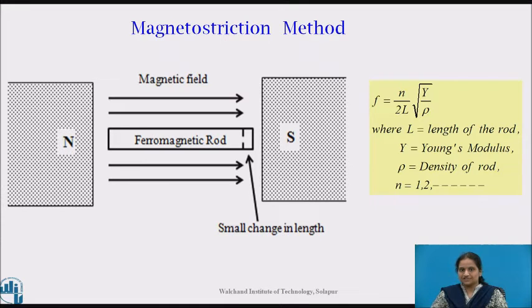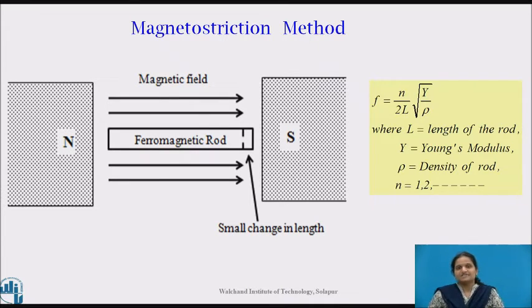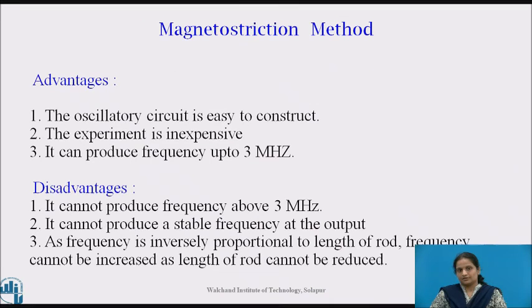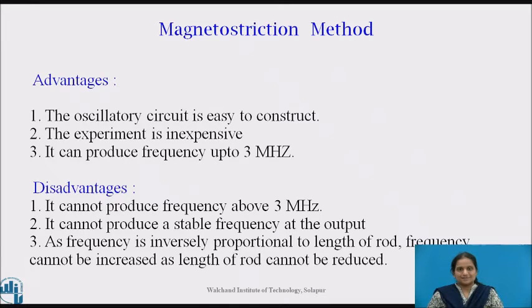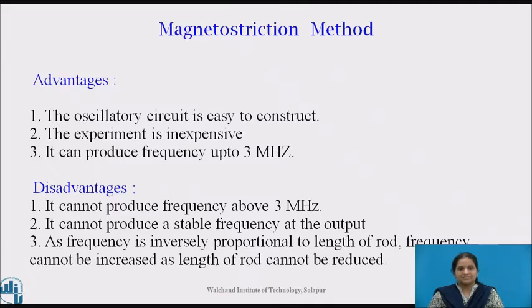As the rod vibrates longitudinally, the frequency of oscillation is given by f = n/(2l) × √(Y/ρ), where l is the length of the rod, Y is Young's modulus, ρ is the density of the rod, and n is any integer. The advantages of this method are that the oscillatory circuit is easy to construct, it can produce frequencies up to 3 MHz, and the experiment is inexpensive. The disadvantages are that it cannot produce frequencies above 3 MHz and cannot produce a stable frequency at the output. As the frequency is inversely proportional to the length of the rod, the frequency cannot be increased as the length of the rod cannot be reduced.